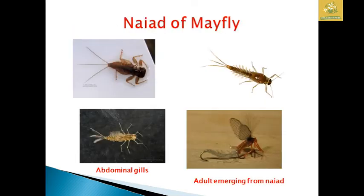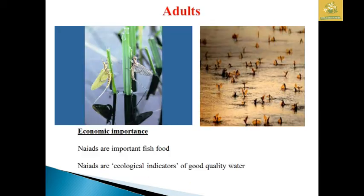I have given pictures of the naiad of mayfly where you can see the abdominal gills on both sides. You can also see the molting process and the formation of the imago as the adult emerging from the naiad. The economic importance: naiads are one of the important fish foods and an ecological indicator of good water quality in the area.